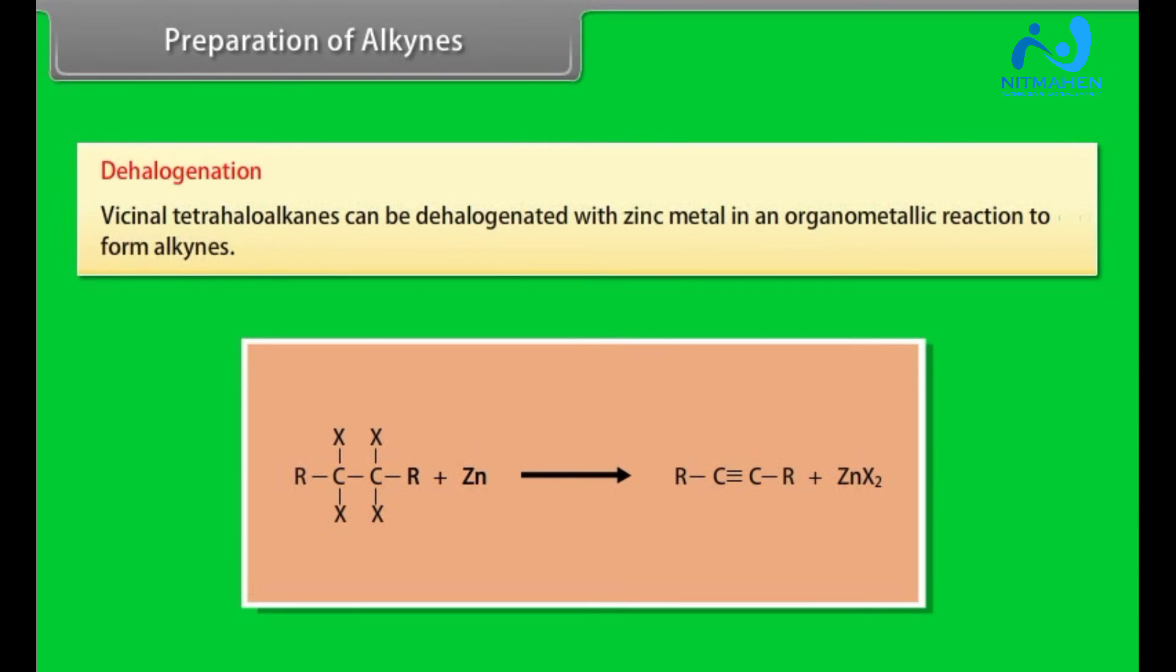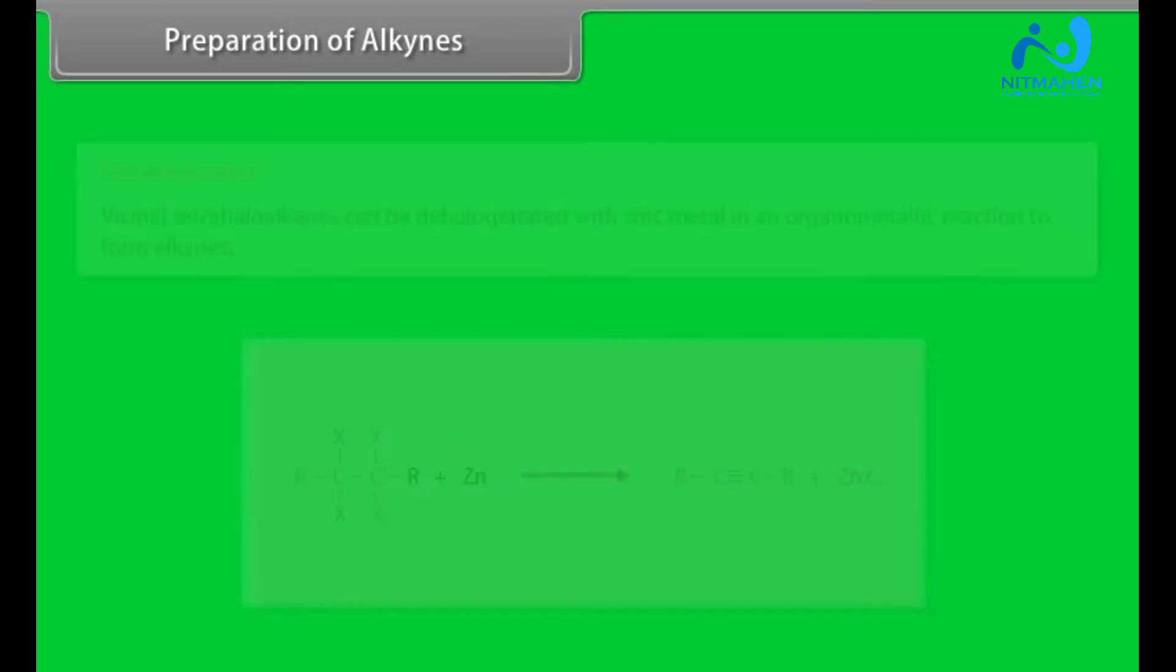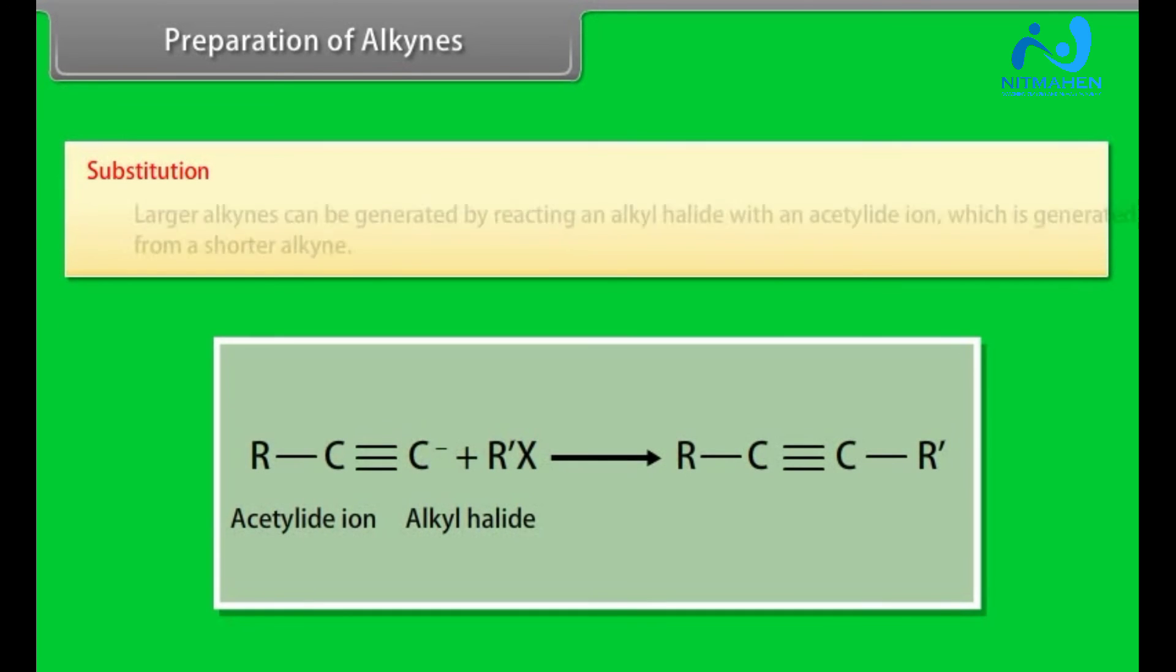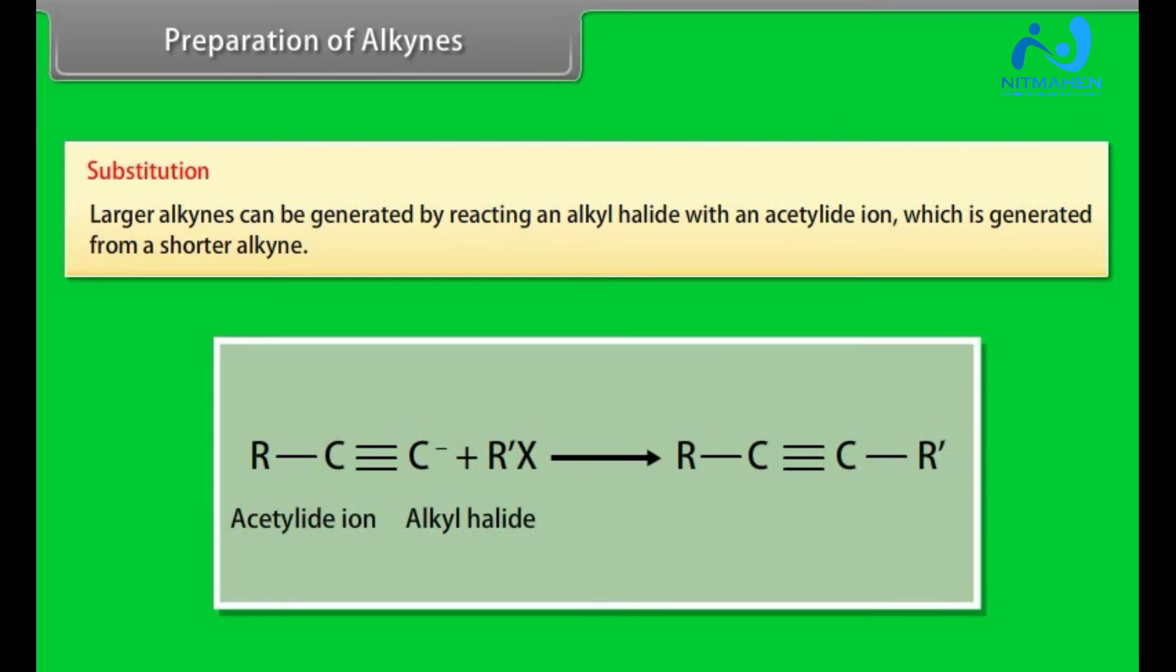Dehalogenation: Vicinal tetrahaloalkanes can be dehalogenated with zinc metal in an organometallic reaction to form alkynes. Substitution: Larger alkynes can be generated by reacting an alkyl halide with an acetylide ion, which is generated from a shorter alkyne.